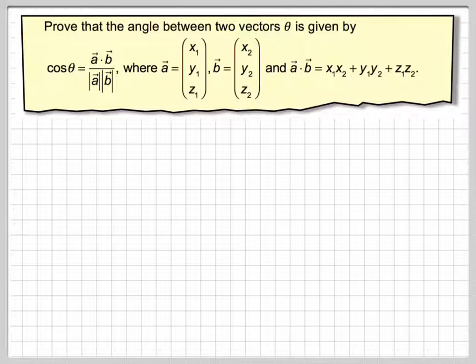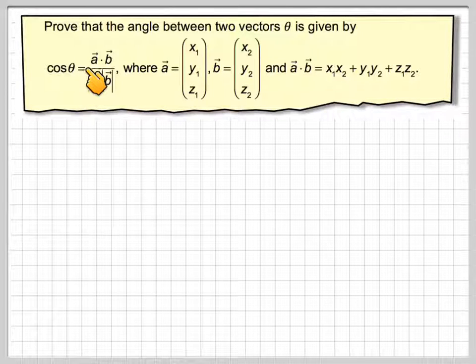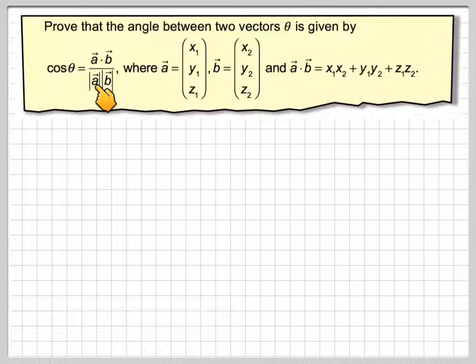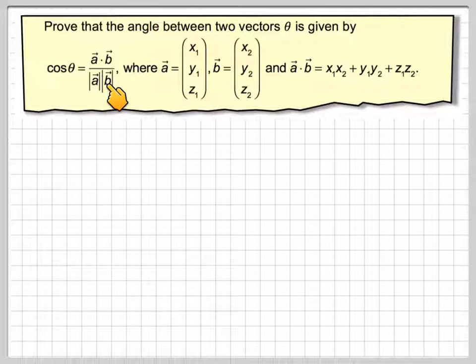Sometimes we want to find the angle between two vectors, and we have to use this idea that the cosine of the angle will be a dot b divided by the magnitude of a times the magnitude of b.